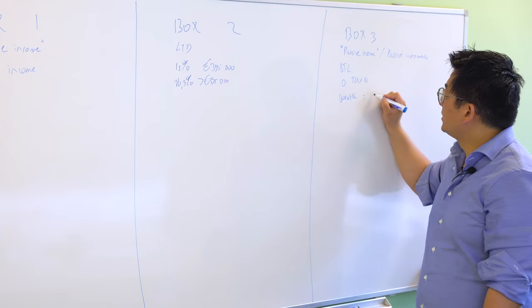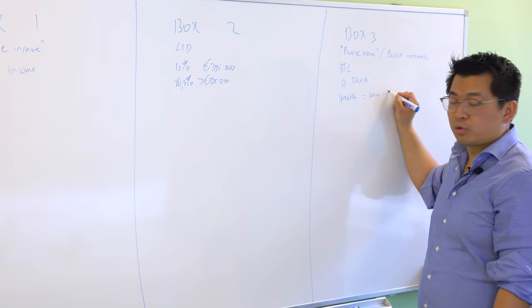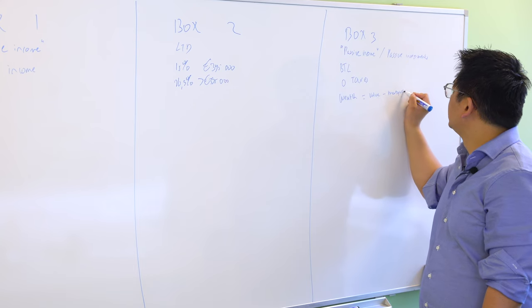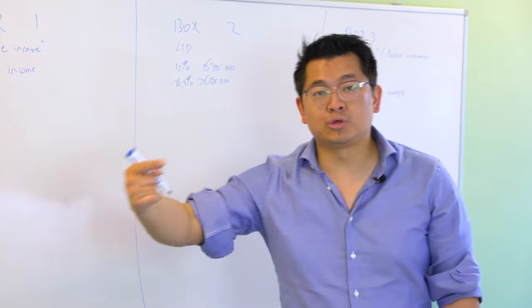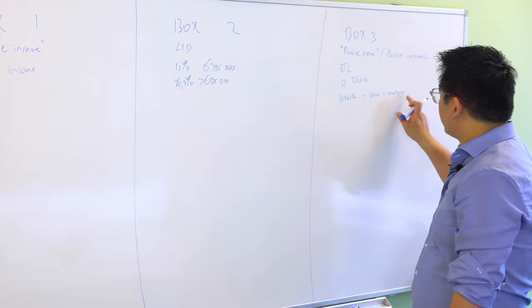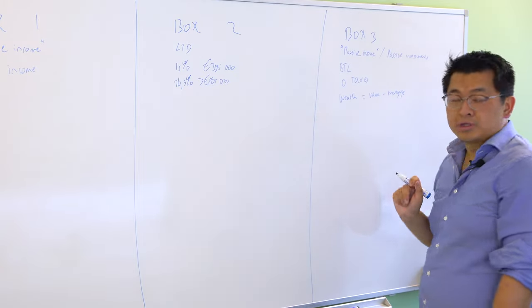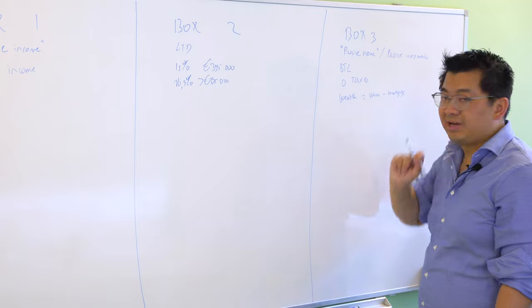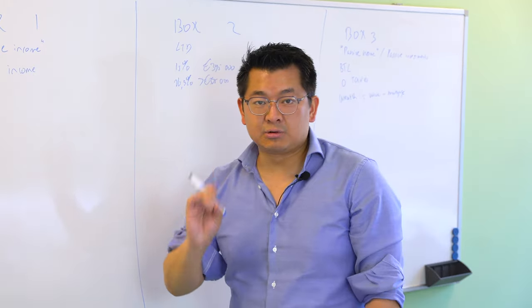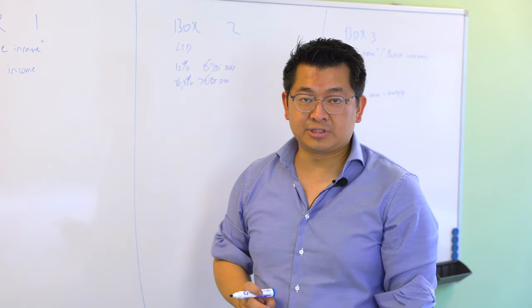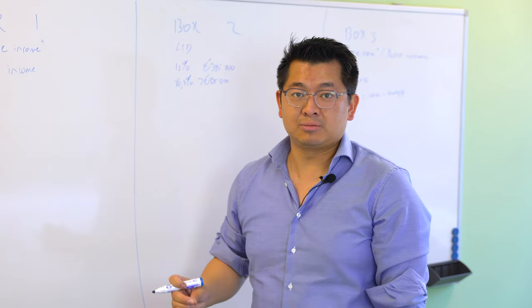The way they calculate my wealth is the value of the object minus my mortgage. However, the value of my object is sometimes taken from one or two years ago. Therefore, especially in a market that increased in price, my mortgage will be higher than the value of my property, which allows me to pay zero tax on the fact that I own the real estate.